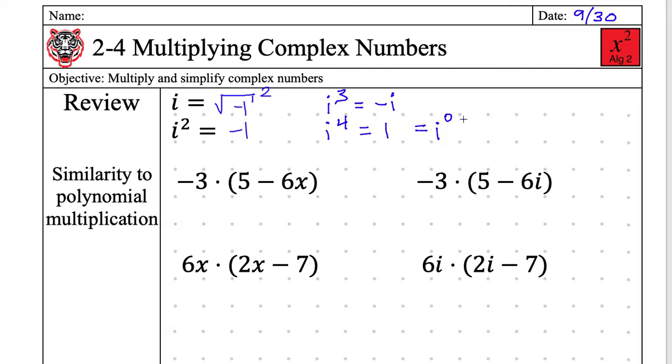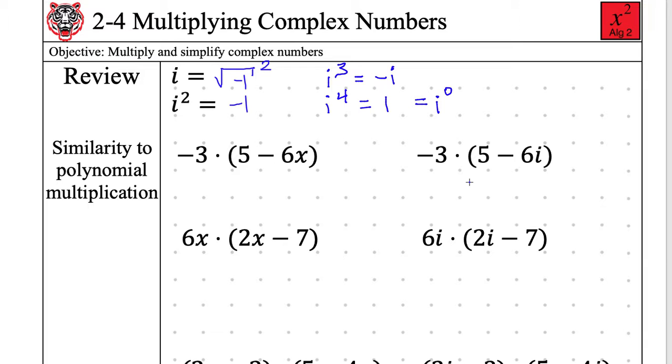Let's move on to the similarity between polynomial multiplication and our complex multiplication. You guys should know how to distribute when you're talking about polynomials, and it's going to be very similar when we talk about complex numbers. Is there a quiet raised hand that can distribute this negative 3 being multiplied by the 5 minus 6x? India. It's going to be negative 15 and positive 18x.